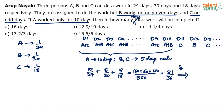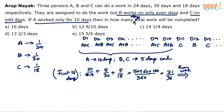Total work is always taken as 1 unit. So 31/36 is done in the first 10 days. The remaining work is 1 − 31/36 = 5/36. This 5/36 still needs to be completed.